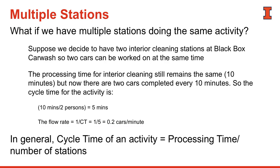In general, the cycle time of an activity is the processing time divided by the number of stations, and the flow rate is one over the cycle time. However, the flow time of the activity doesn't change — it's still 10 minutes, because any single car going through this activity still takes 10 minutes. So the flow time doesn't change, but the flow rate and cycle time do change.